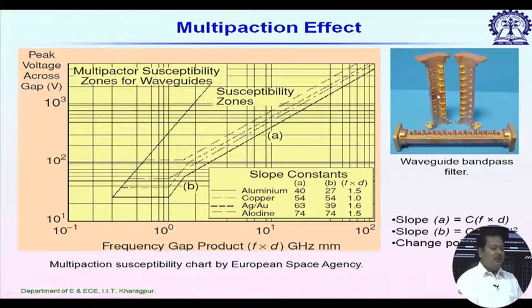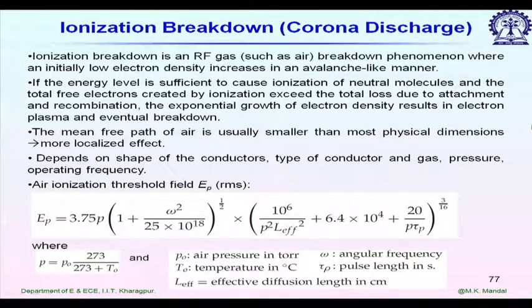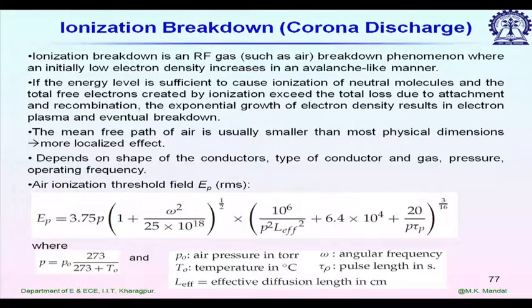This type of structure is very prone to multipaction because of the screw tips and the cavities — there are many metal plates inside, so the effective separation d decreases and the multipaction probability increases. Next is ionization breakdown, sometimes also called corona discharge. In this case we consider a scenario where air is present inside the rectangular waveguide. If we have dry air, usually we do not face any problem, but if we have water vapor inside, we have a problem.